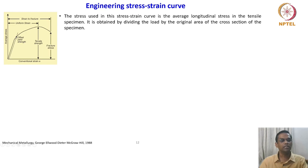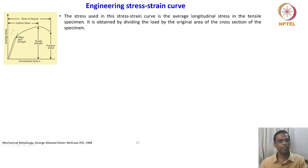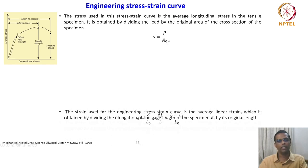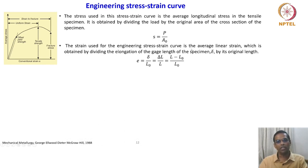To find the yield strength there is something called offset yield strength that is defined. There is also uniform strain, which goes up to the maximum, and the strain to fracture up to the fracture point; then you have offset yield strength, tensile strength, and fracture stress. The engineering stress is represented by S, given by S = load divided by the original area. The strain used for the engineering stress-strain curve is the average linear strain, e = δ/L₀ = ΔL/L = (L − L₀)/L₀.